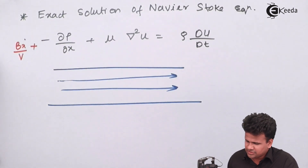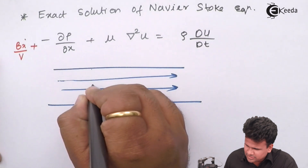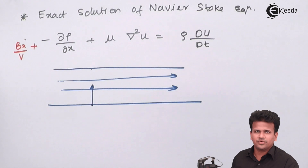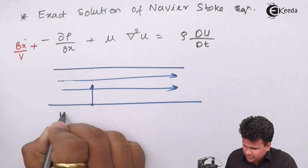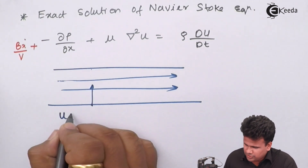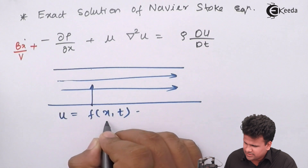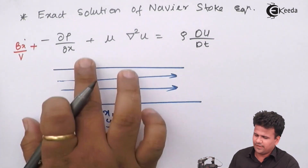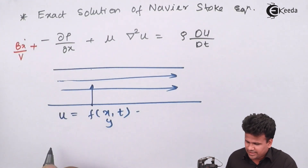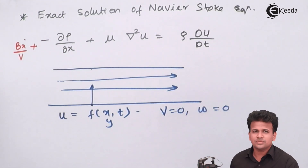The fluid is flowing in the positive direction of the X axis. There is a velocity gradient across the Y direction due to the viscosity of the fluid. We are only considering velocity U, where U is a function of X, Y, and T, since U is changing with Y. This means V equals 0 and W equals 0.